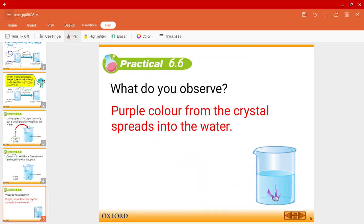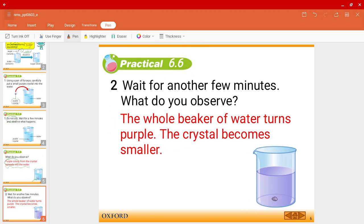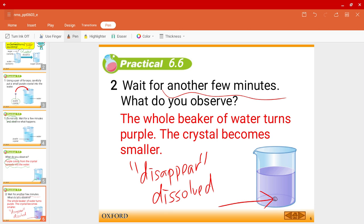So after a few minutes you'll start to observe that the purple color coming from the crystal will start to spread into the water. And then right after a few more minutes eventually the whole beaker turns into purple and you will also notice that the crystal will become smaller and smaller, eventually disappear. Now in fact actually it's not really disappearing, it has just dissolved into the water. So it's not really disappearing but it shows this phenomena.